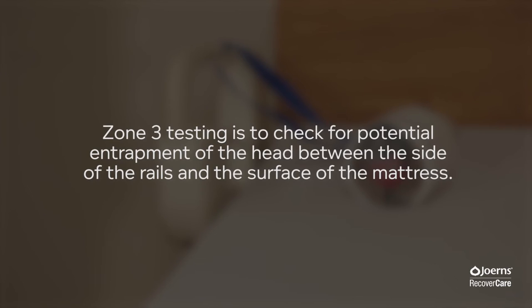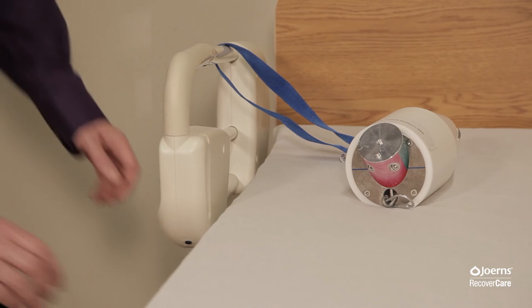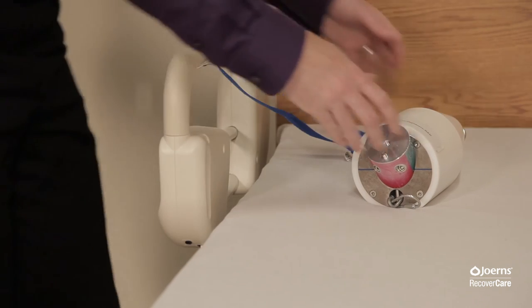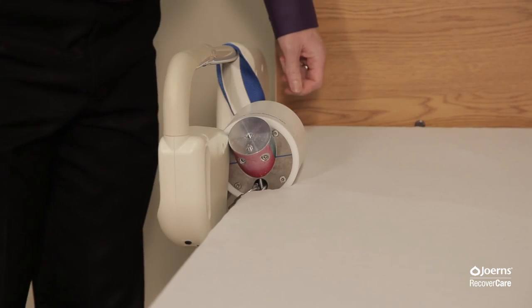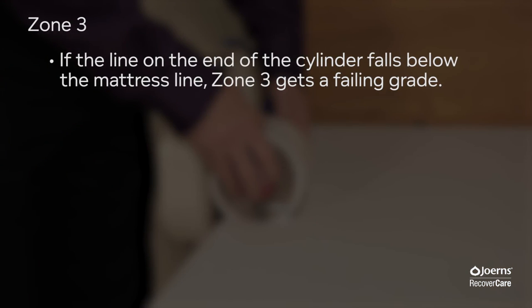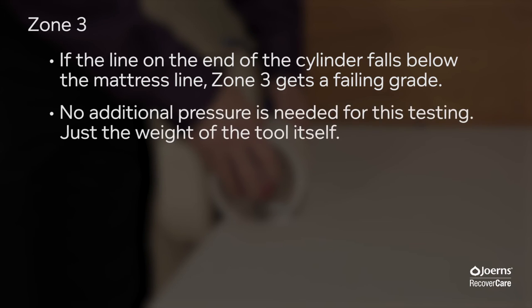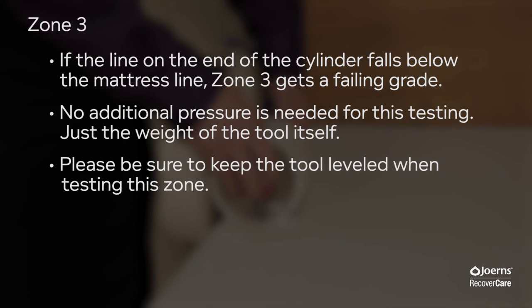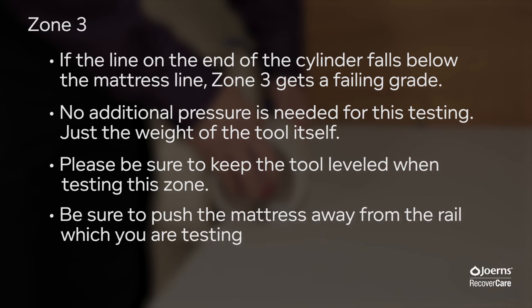Zone 3 testing is to check for potential entrapment of the head between the side of the rails and the surface of the mattress. Zone 3 testing uses the cone and scale. Push the mattress away from the rail when testing. Strap the cone to the rail. Confirm if the rail and mattress passes when the line on the cone is above the mattress. If the line on the end of the cylinder falls below the mattress line, Zone 3 gets a failing grade. No additional pressure is needed — just the weight of the tool itself. Be sure to keep the tool leveled when testing this zone.